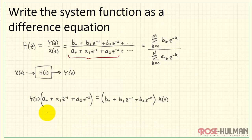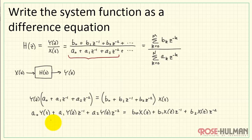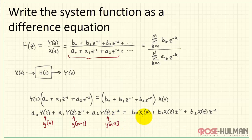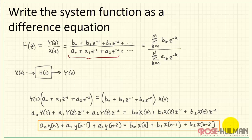Let me rewrite things by moving the pieces of the polynomial around to each side of the equation, then apply the distributive property for y of z and x of z. The inverse z-transform of each of these terms gives y of n, y of n minus 1, y of n minus 2. So z inverse raised to various powers introduces a delay. From this, we have the difference equation corresponding to our system function.